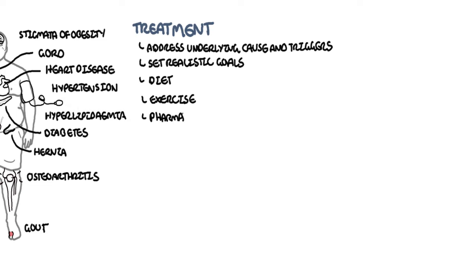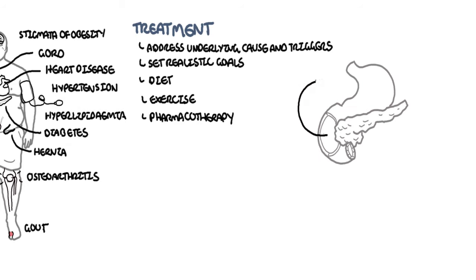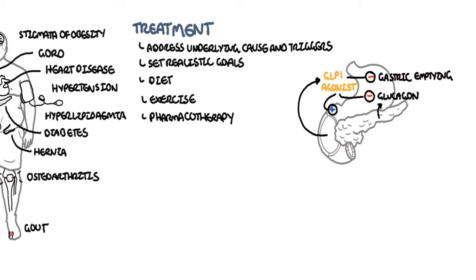Pharmacotherapy also has a role in the treatment of obesity, usually when all other approaches fail. These include GLP-1 agonists. GLP-1 is a normal peptide produced by the body that slows gastric emptying, inhibits glucagon excretion, and stimulates insulin production. Side effects include nausea and vomiting, and GLP-1 agonists are given as an injection into the abdomen or thigh.